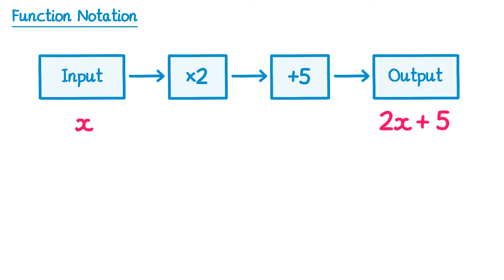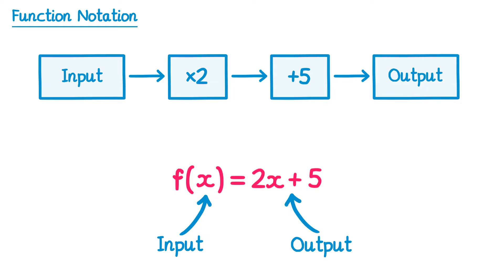This could be written down instead using function notation. We would first of all write f and then some brackets. Inside the brackets we'd place our input, which is x. On the right hand side we'd write 2x plus 5 because that's the output. This is how you would write down this function machine using function notation.